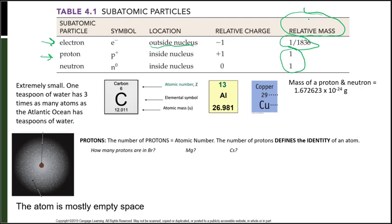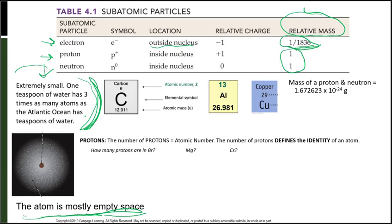Even if you look at the largest element on the periodic table — 118 protons and 118 electrons if neutral — 118 electrons is not even a tenth the mass of one proton or one neutron. The atom is mostly empty space. We know atoms are extremely small: one teaspoon of water has three times as many atoms as the Atlantic Ocean has teaspoons of water.